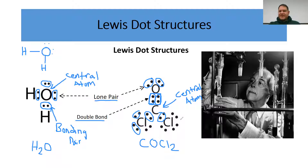The keywords you need to identify are: the central atom, lone pairs, and bonding pairs. In some situations, some atoms form double bonds or even triple bonds, and you need to identify the difference between single, double, and triple bonds in these Lewis structures.